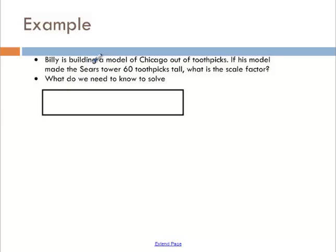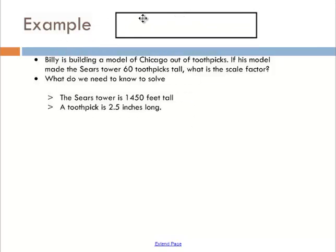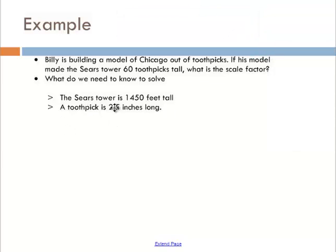Billy is building a model of Chicago out of toothpicks. If his model made of the Sears tower is 60 toothpicks tall, what is the scale factor? Think about what we need to know to solve. What do we need? Well, some things we might need. We need to know the height of the Sears tower, as well as how big a toothpick is. Got that information there. Sears tower is 1450 feet tall and his toothpick is 2.5 inches long.